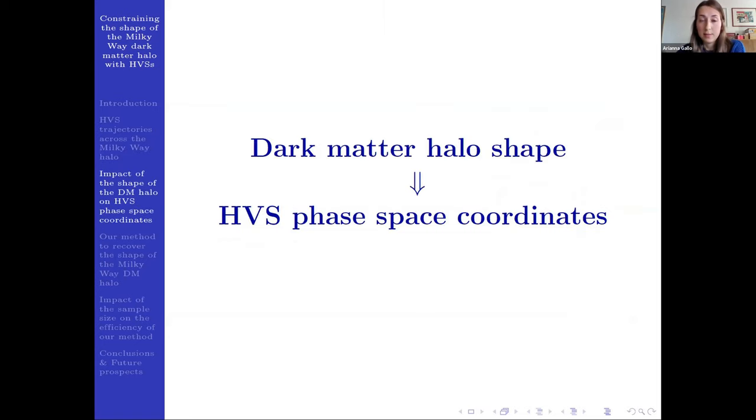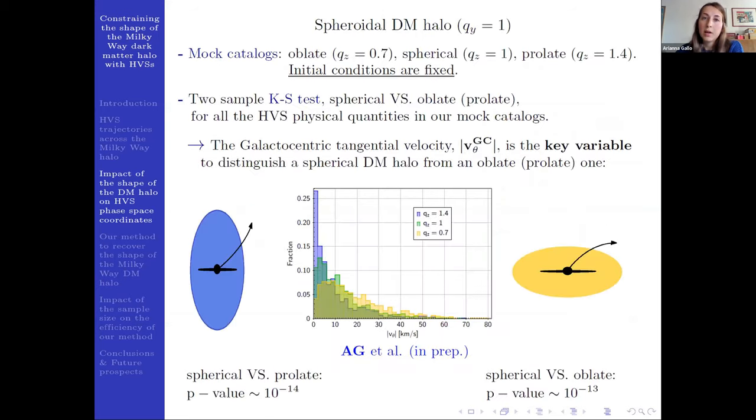So now our analysis can start, and we want to investigate the impact of a change in the dark matter halo shape on the distribution of HVS phase space coordinates. So hereafter, I will consider the simpler spheroidal dark matter halo case, so q_y is fixed and equal to one.